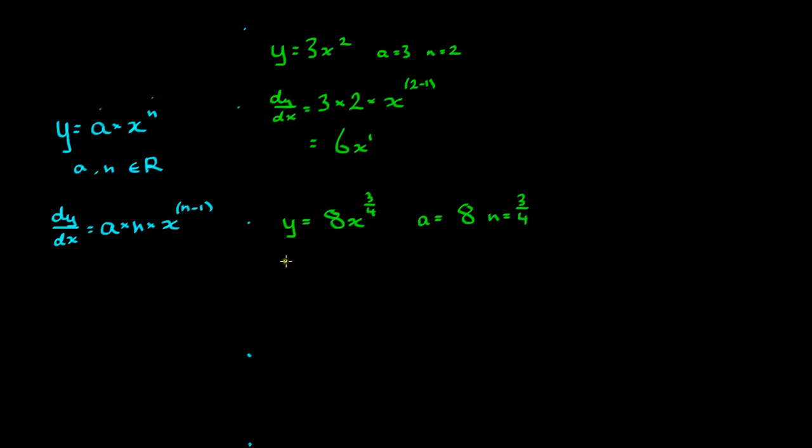So if we want to derive or differentiate this expression, we use the same formula that we used above. dy dx is equal to 8, which is a times n, which is 3 on 4, times x to the power of n minus 1. So it's 3 on 4, minus 1.